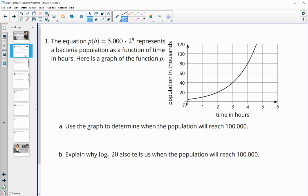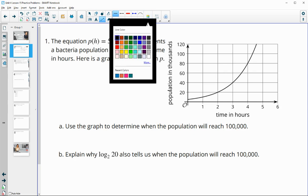So number one gives us the equation P of H given by this, which represents the bacteria population as a function of time that's being measured in hours, and the population is being measured in thousands. So let's use the graph to determine when the population will reach 100,000.